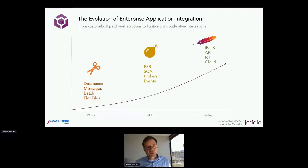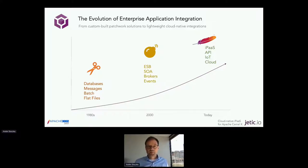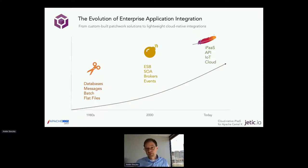Let me give you the picture of the evolution of enterprise application integration. EAI is basically the problem Apache Camel is solving. Looking back to the 1970s and 1980s, companies started using more than one application. They had small ERP applications trying to process all data in one place, and as more applications came to market they faced the challenge of integrating these systems.